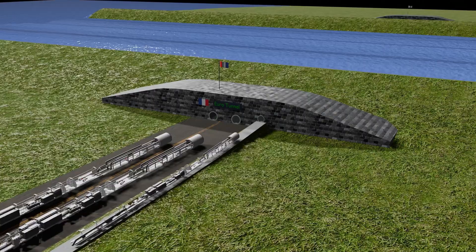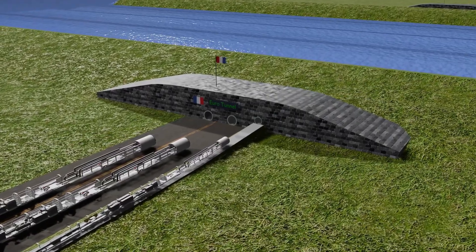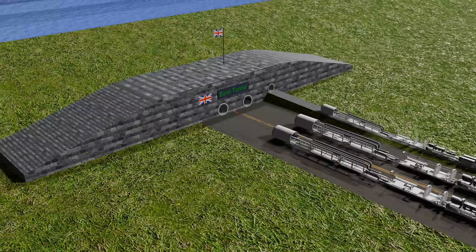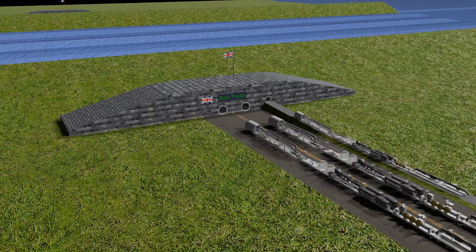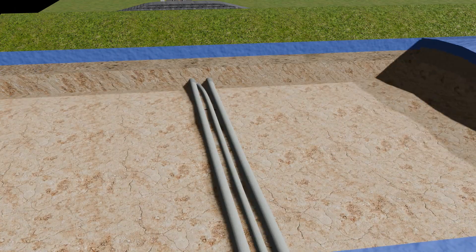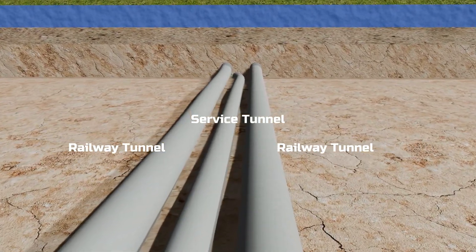In 1988, when construction of the tunnel began, both countries decided to dig from their respective sides and meet at a central point. Interestingly, three parallel tunnels were to be built simultaneously: two railway tunnels and one service tunnel, all constructed together.